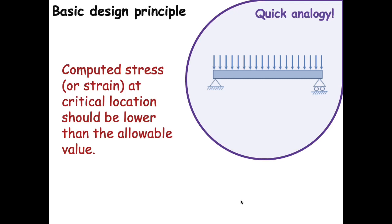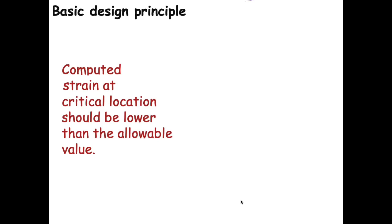For a beam subjected to uniformly distributed load, there is a location where bending stress is critical and another where shear stress is critical. We compute those stresses and check whether they are lower than the allowable value; if not, we adjust the beam dimensions. For bituminous pavement, being a flexible structure, it is the strain values that are more critical and govern the design. So the computed strain at the critical location should be lower than the allowable values.